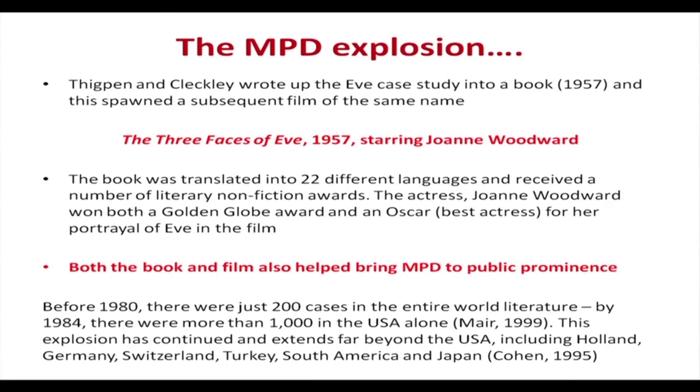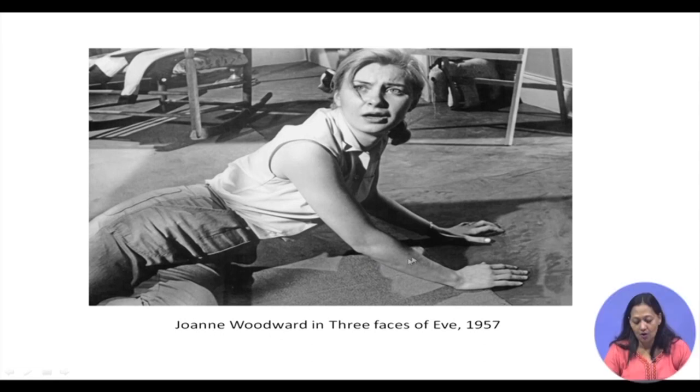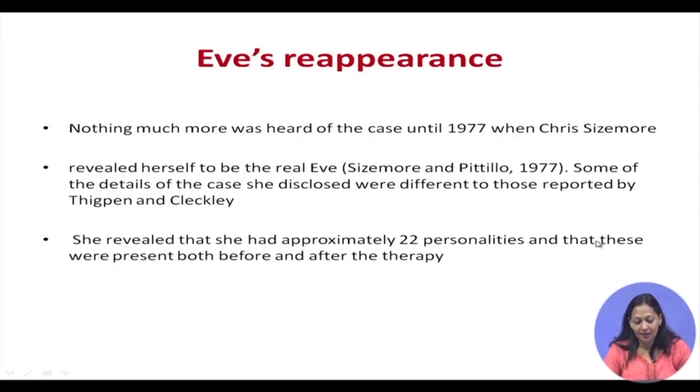Right after Thigpen and Cleckley's book and the movie, there were too many cases of multiple personality being reported. However, Thigpen and Cleckley reported that other than Eve, there was only one more case of MPD they had seen in their 30 years of practice. So most of the cases being reported at the time were actually not cases of MPD.